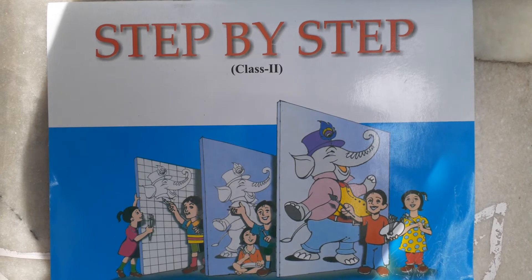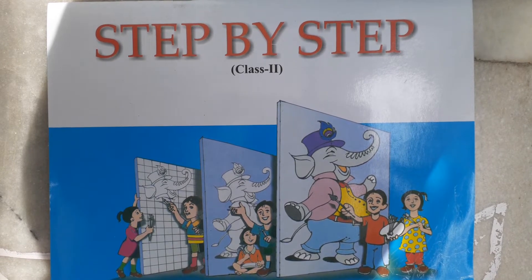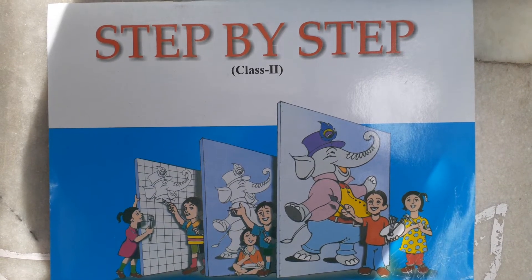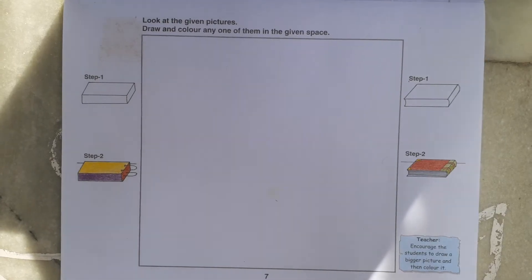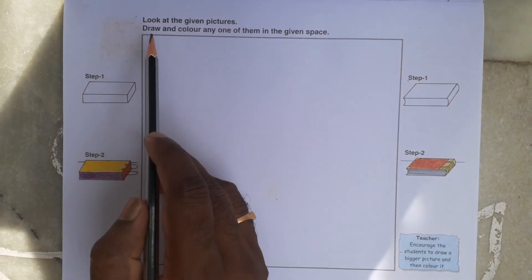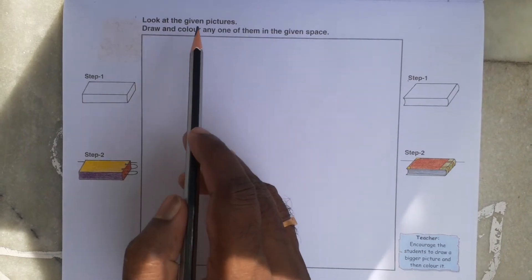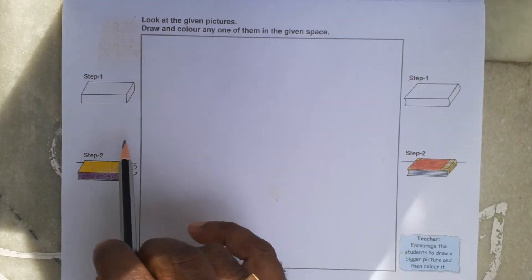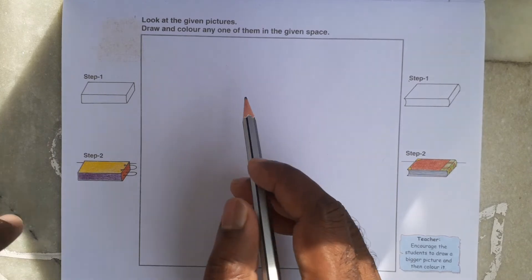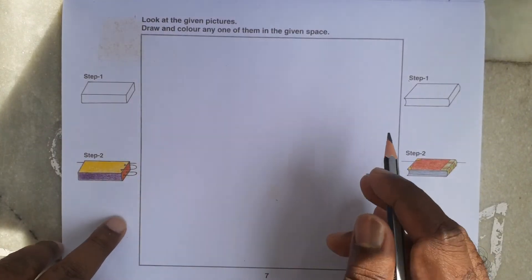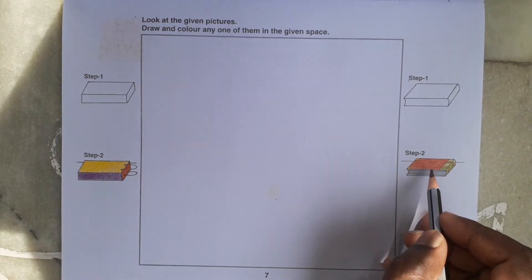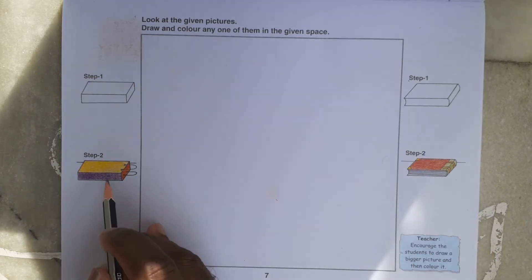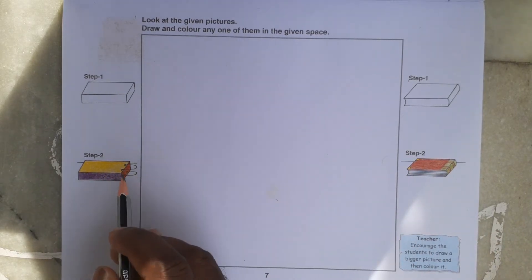Good afternoon children, welcome back to our art class. Open your Step by Step book to page number seven. Today we have to draw and color any one of them in the given space. I am going to draw this book. You can draw the bag as well.